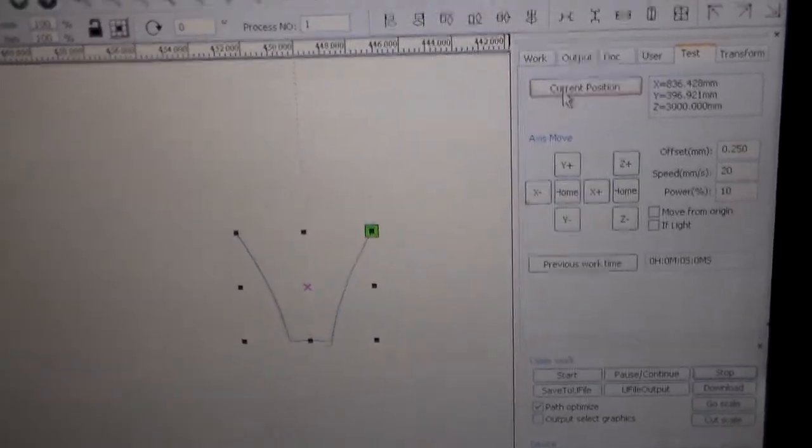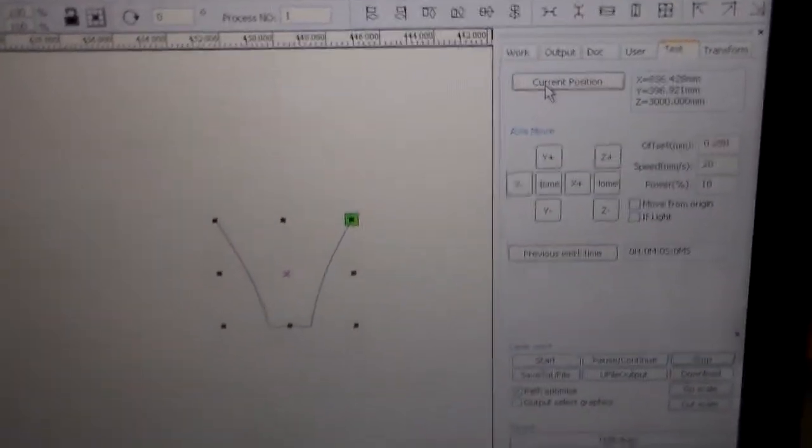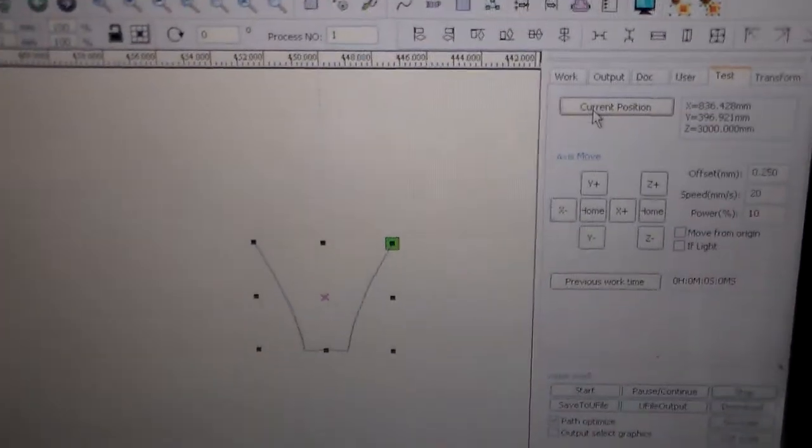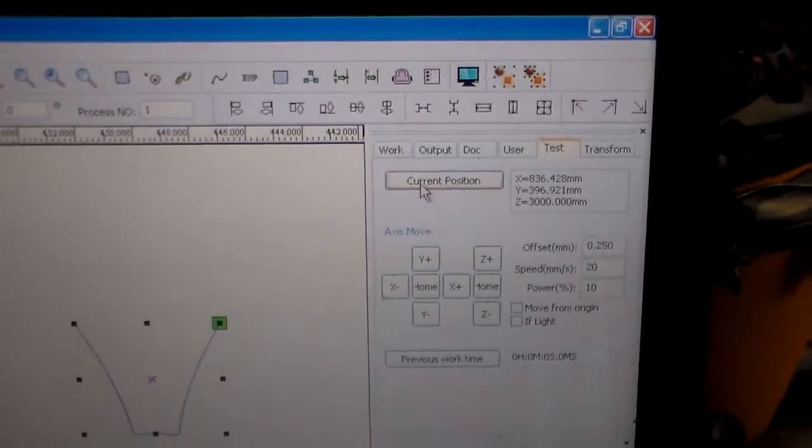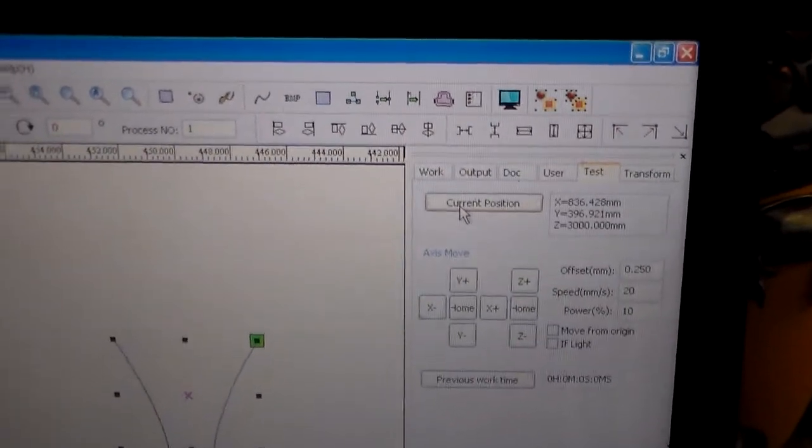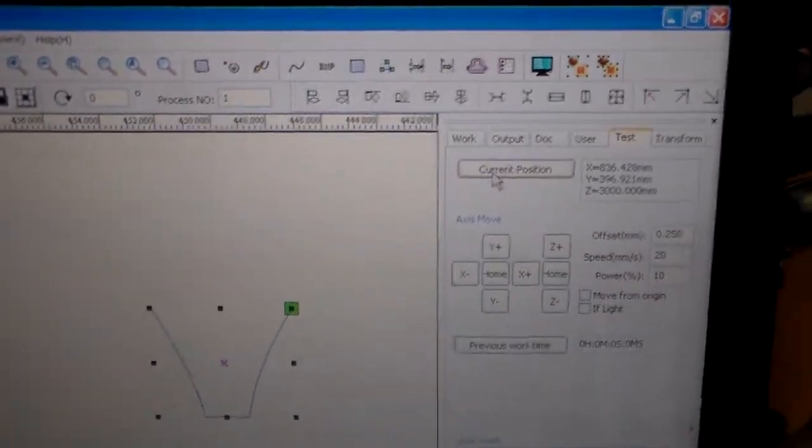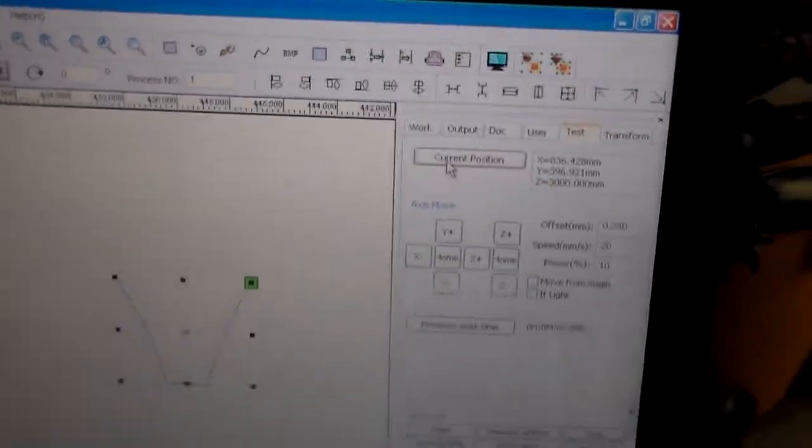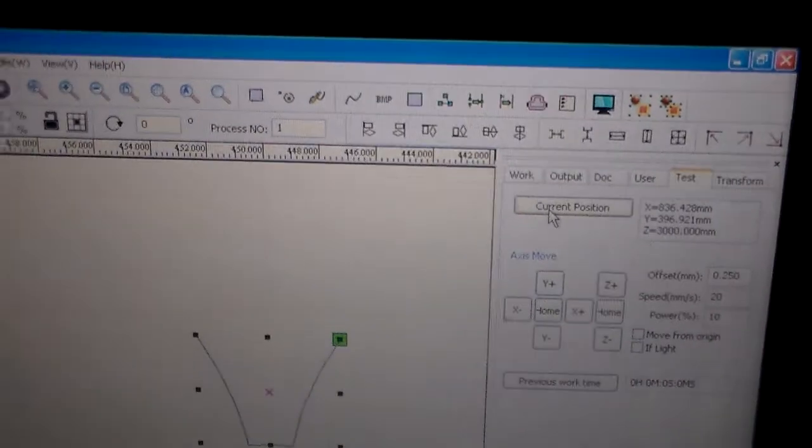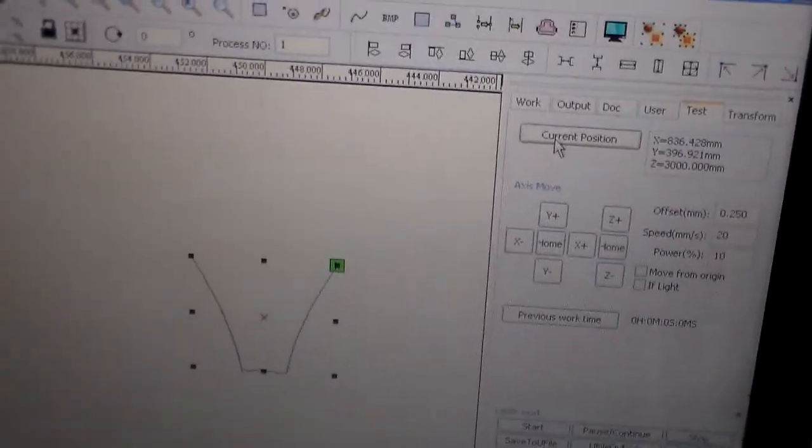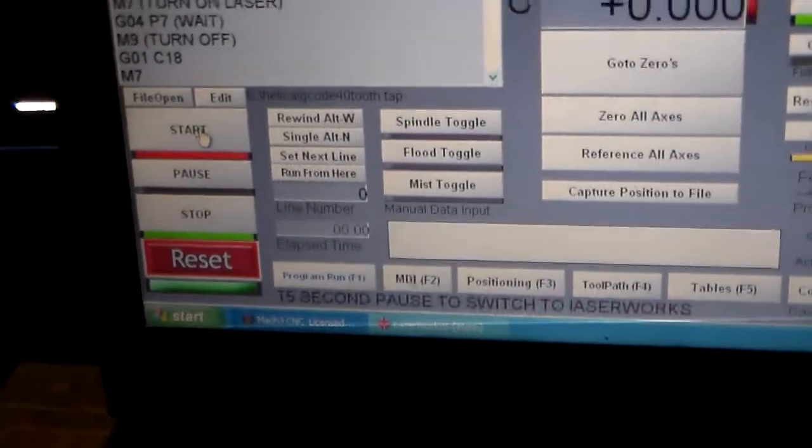In LaserWorks, I have the involute tooth shape from Gerotix Motion 3, and I've jogged the C-axis over to where it will start cutting a half a tooth to the right of the center line. I'm going to pause again, and I'm going to get this started. Okay, we're back at Mach 3. I'm going to click to start.